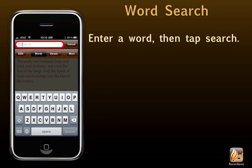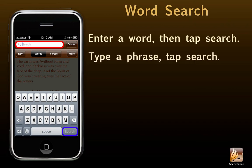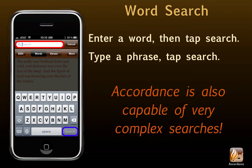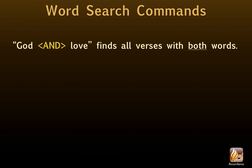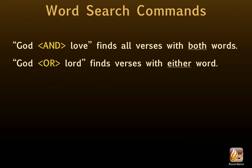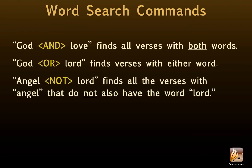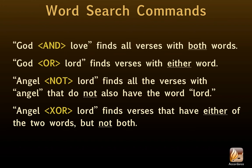Searching for a single word is very easy — just enter a word, then tap Search. The same procedure is used to search for a simple phrase. Accordance is also capable of very complex searches. In fact, searches are only limited by our imagination. Here are a few of the commands Accordance recognizes. They can be entered using the command icon, or just typed in, whichever the user finds easier. GOD AND LOVE finds all the verses with both words. GOD OR LORD finds verses with either word. And ANGEL NOT LORD finds all the verses with ANGEL that do not also have the word LORD. ANGEL EXOR LORD finds verses that have either of the two words, but not both.